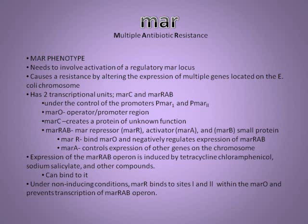MAR, which is multiple antibiotic resistance, is a phenotype. It involves activation of the regulatory MAR locus on the E. coli bacterium DNA. MAR causes resistance by altering the expression of multiple genes located on the E. coli chromosome. It has two transcriptional units, MAR-C and MAR-RAB, which are under the control of two promoters, PMAR-1 and PMAR-2. There is an operator promoter region called MAR-O, which can either go towards the MAR-C region, creating a protein of unknown function, or MAR-RAB, which consists of a repressor that binds on MAR-O and negatively regulates expression of MAR-RAB, and an activator which controls expression of other genes on the chromosome, and a small protein called MAR-B. Expression of the MAR-B operon is induced by tetracycline, chloramphenicol, sodium salicylate, and other compounds.